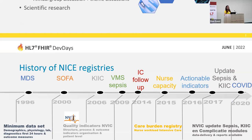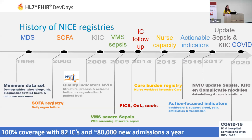Some history on NICE: it started in 1996 with a smaller minimum data set collecting demographics, physiology data, and diagnostics from the first 24 hours of patient admission. It then extended with daily organ failure scores, quality indicators, and other registries. During the COVID crisis they also added a COVID module — because they already had the infrastructure in place, it was relatively easy to extend. They became the main source of information for the Dutch ministry and national health institute.